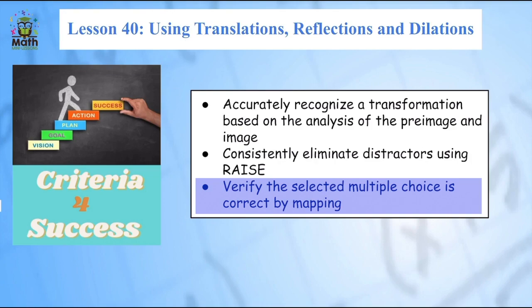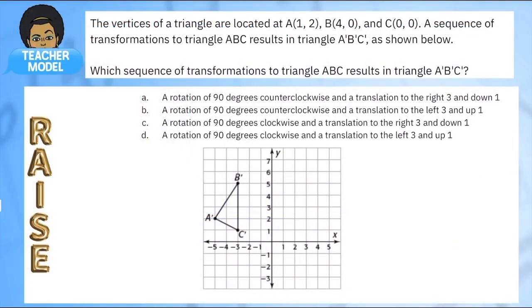And how I verify the selected multiple choice is correct by mapping the image on the graph. Let's start doing some application work and now we have some multiple choice questions. Let's use everything we've learned to answer them. Using RAISE, we'll start by just reading the question. The vertices of a triangle are located at these points A, B, and C. A sequence of transformations to triangle ABC resulted in triangle A'B'C' as shown below. So we have the original points and we have the new image.